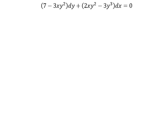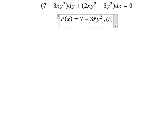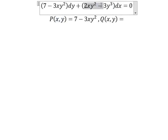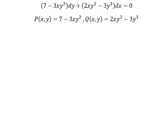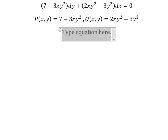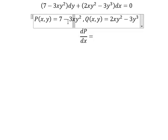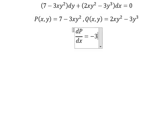We put P(x,y) equals to this one, and Q(x,y) equals to this one. So because we have dy, we need to do first the derivative of the function P with respect to x. So we just have only x here. First derivative of x, you get about negative three y squared. We have dx.